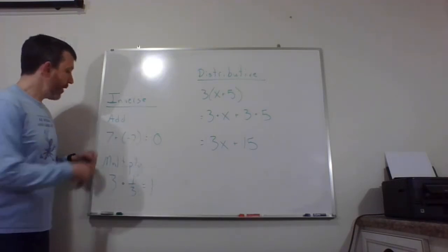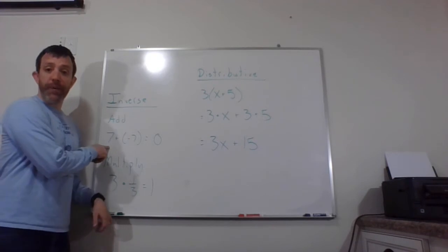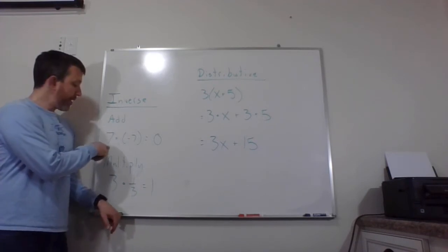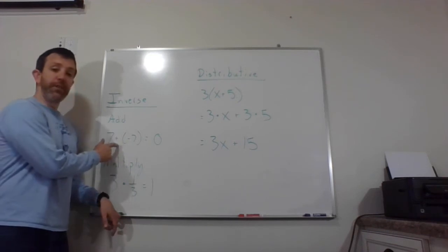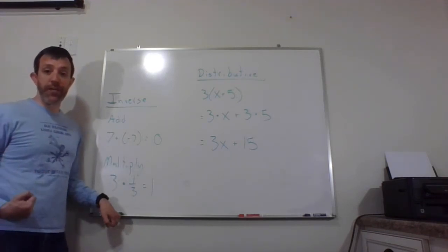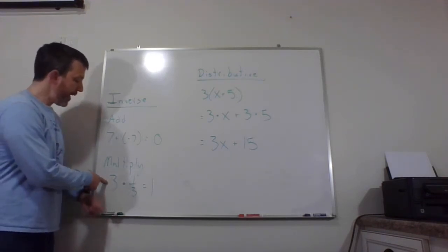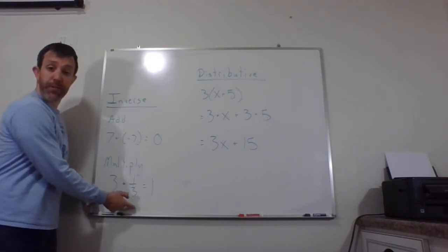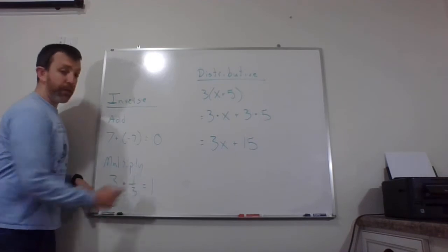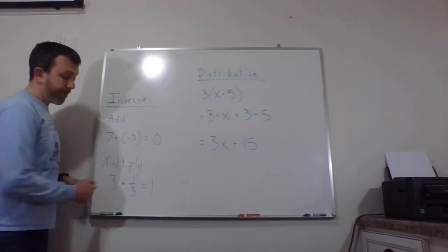So we're going to go back to those places. For addition, you get back to zero by adding an opposite. So if you have a seven, you add a negative seven and that gets you to zero. That's actually going to be a really important thing when we start solving equations. For multiplication, three times its reciprocal, and we always use the reciprocal, will be one. And you can see that for yourself.